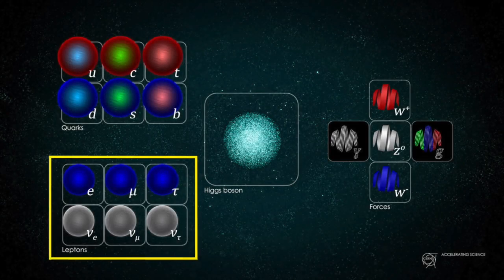Fundamental particles of matter come in two forms: leptons and quarks. A big difference between them is that, unlike quarks, leptons don't take part in strong interactions. They're subject to gravity, the weak force, and, if they're charged, electromagnetism. But they don't experience the strong force.